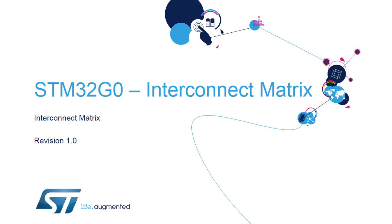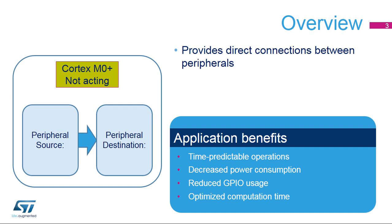Hello and welcome to this presentation of the STM32 interconnect matrix. It covers the main features of this matrix, which is widely used to connect various internal peripherals between each other. The interconnect matrix integrated inside STM32 products provides direct connections between peripherals. Applications benefit from these interconnections to ensure time-predictable operations, to decrease power consumption by avoiding complex management of peripheral communications through reading or writing registers using CPU instructions, and to reduce the need to loop the signal from a source to a destination through a dedicated GPIO.